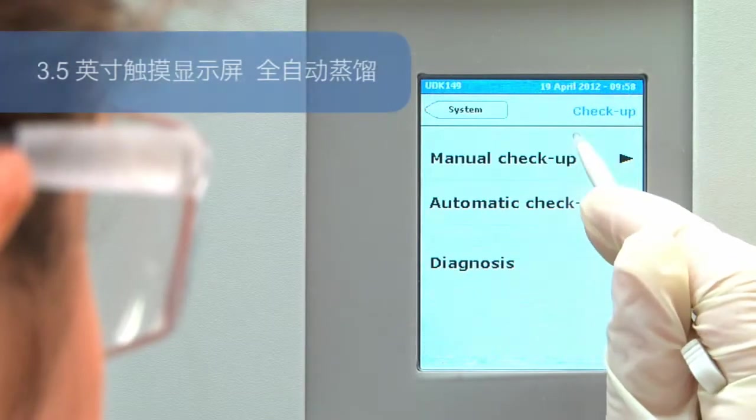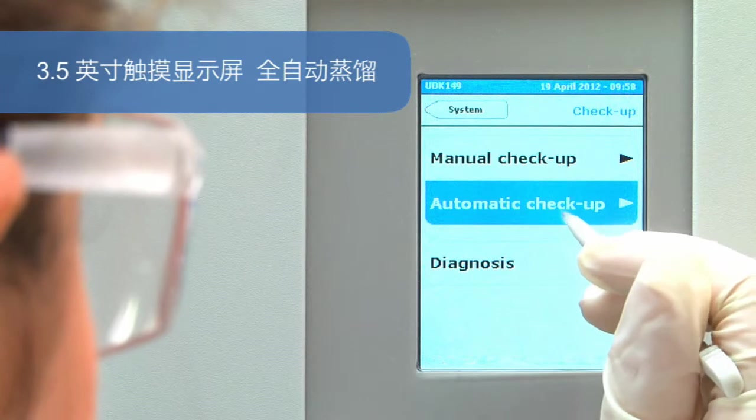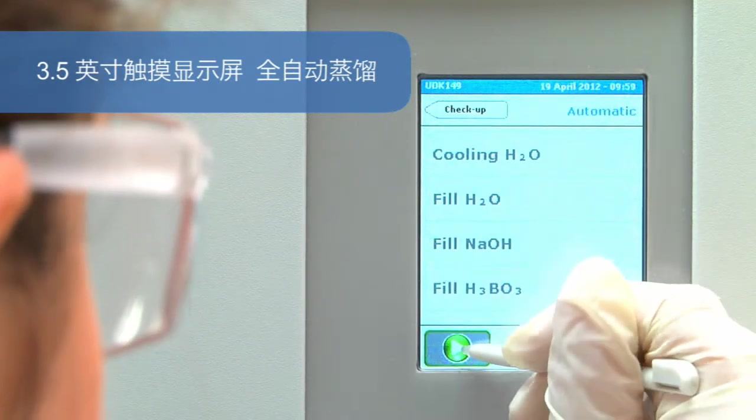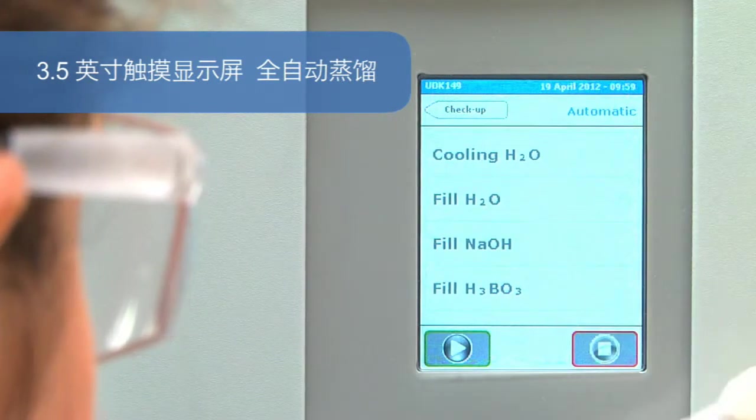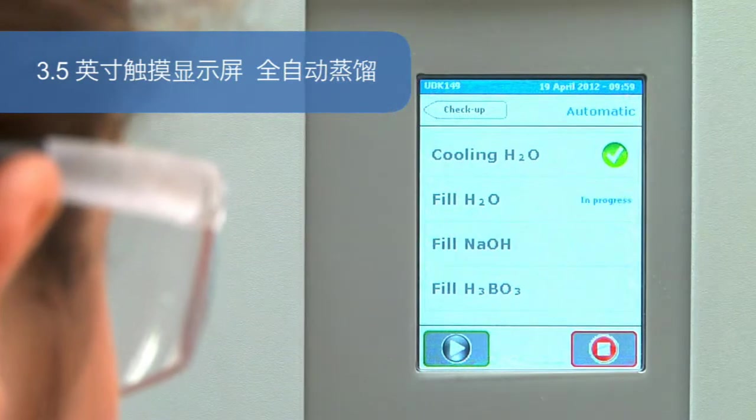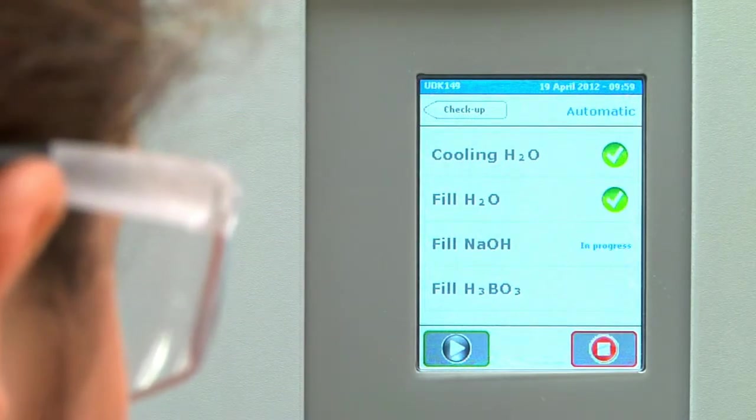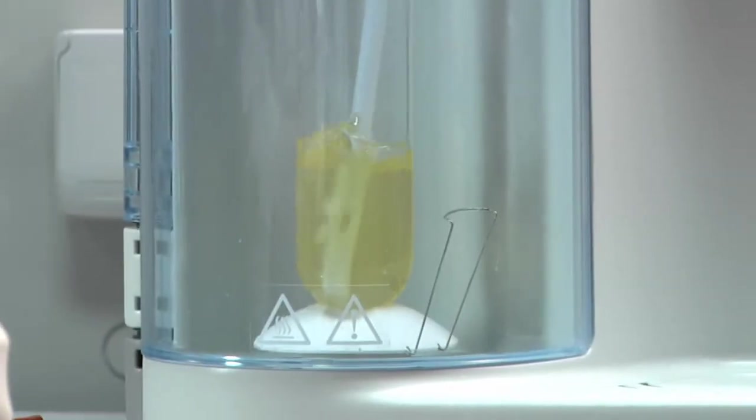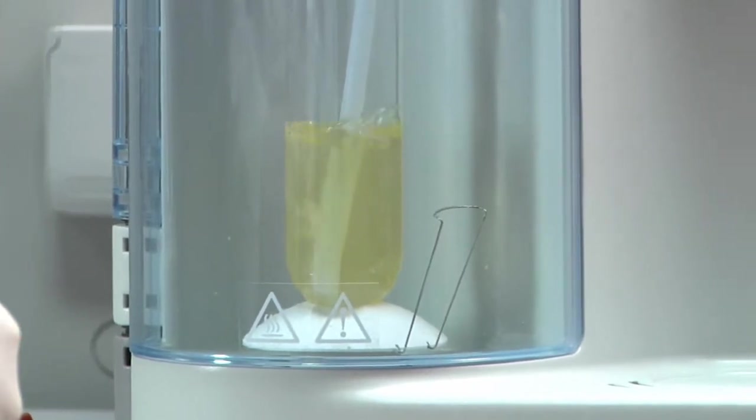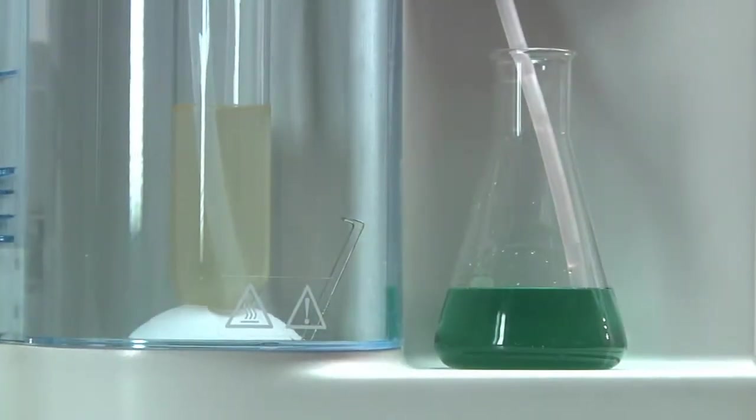With a 3.5-inch touchscreen color display, the UDK 149 achieves automatic distillation through alkali, dilution water and receiver solution addition, with pre-programmed distillation protocols and reaction times.